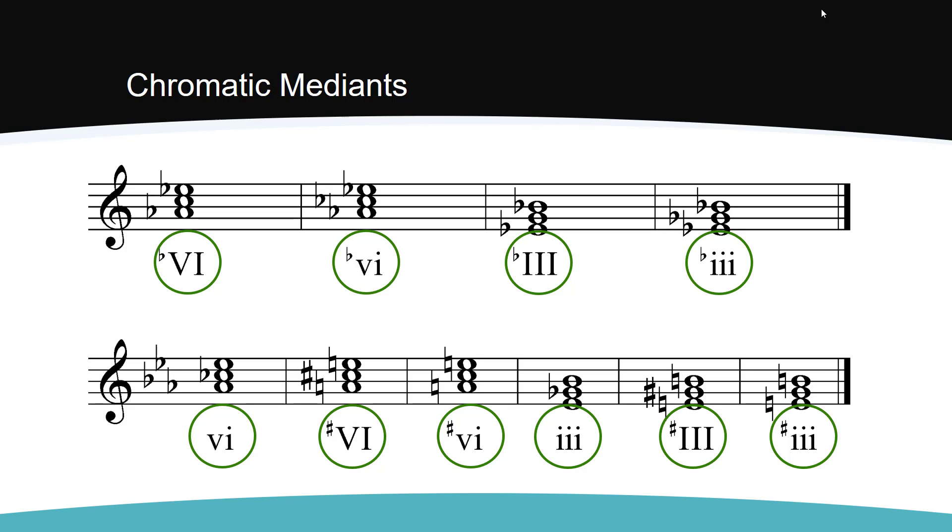You may recognize the flat major 6 as a borrowed chord. Be careful with these chords in your analysis. Many chromatic mediants are spelled the same way as altered chords or applied chords. You must use the context of the other chords in the progression to determine if the harmony is functioning as a chromatic mediant, borrowed chord, or applied chord.